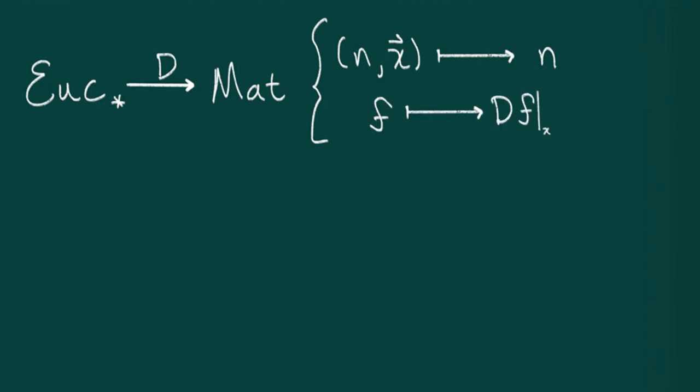Differential calculus suggests that there is a relationship between Euclidean spaces and matrices. In other words, the derivative should give some sort of correspondence between the category of pointed Euclidean spaces and this category of matrices. This correspondence should take an object n, x and spit out n. It should take a smooth map f to its derivative evaluated at the point x.